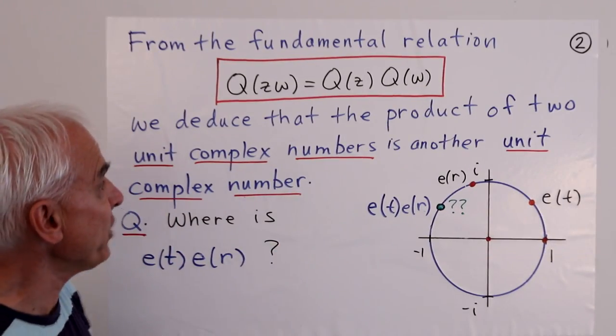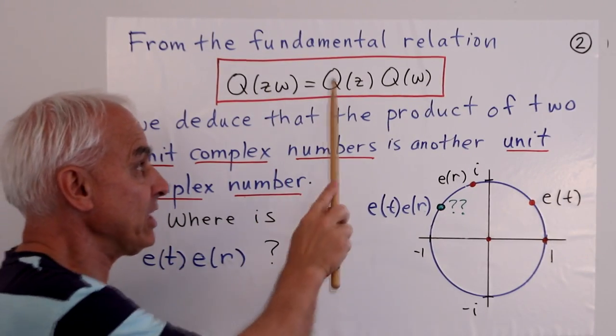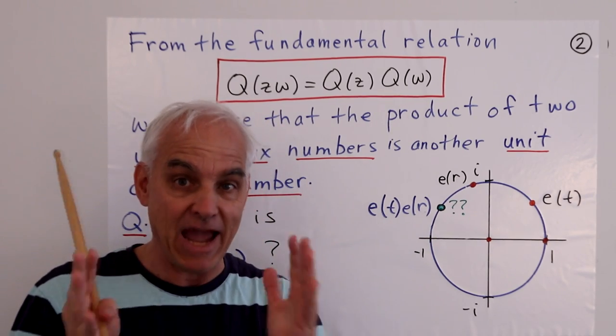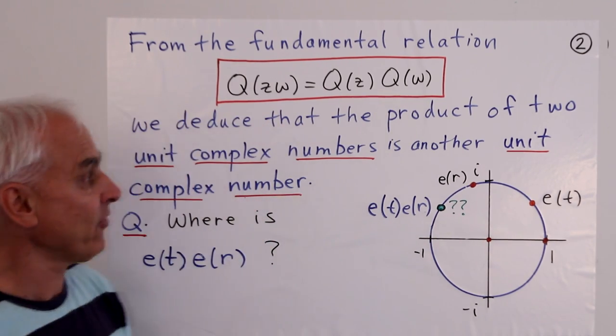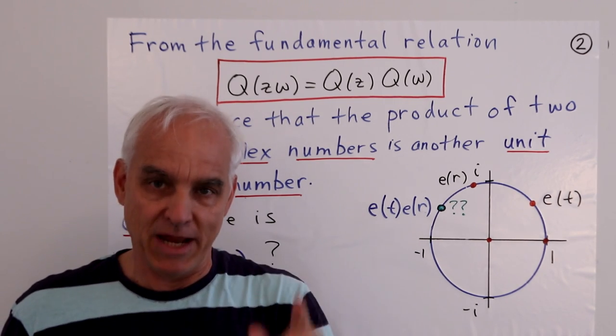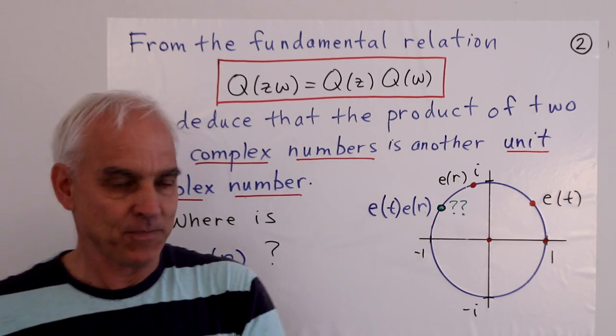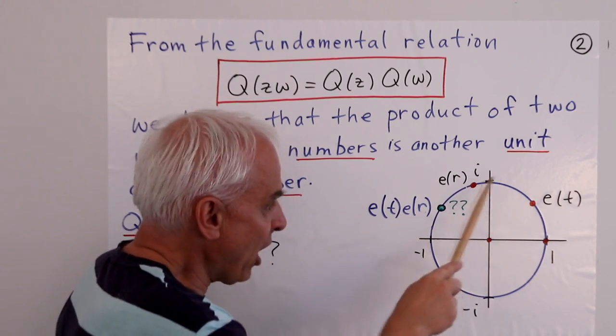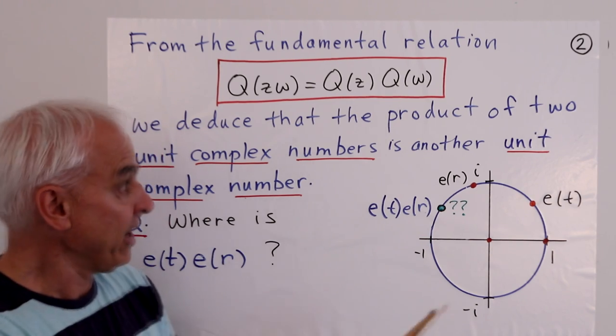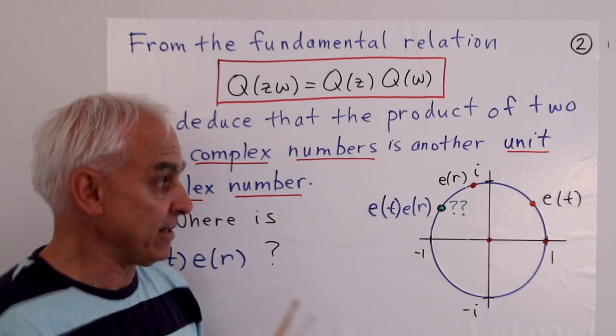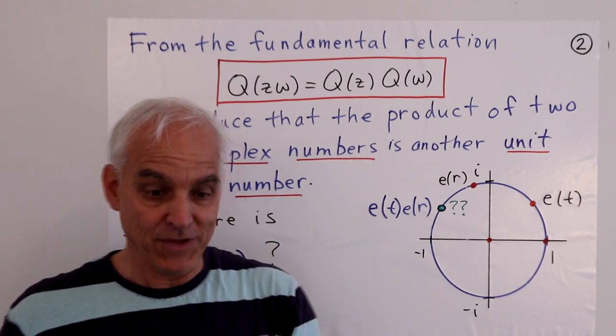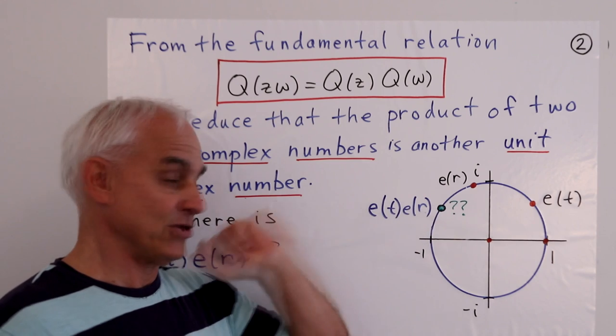From the fundamental relation that Q(zw) equals Q(z) times Q(w), a basic aspect of quadrance for complex numbers, we can deduce that the product of two unit complex numbers is another unit complex number. If we have two points on the unit circle and take the product z times w, then the new number also has quadrance 1, so it will also lie on the circle.